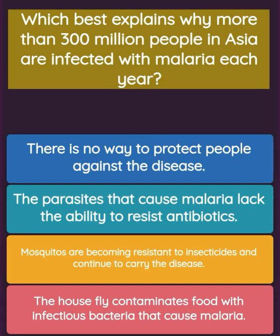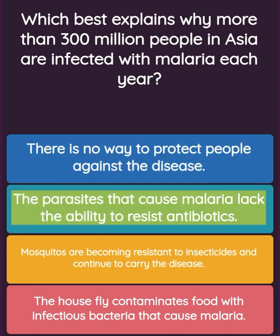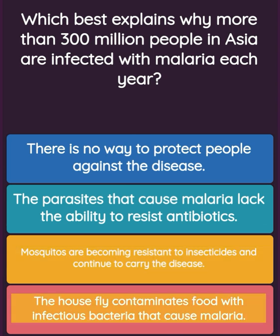Question: Which best explains why more than 300 million people in Asia are infected with malaria each year? Option one: there is no way to protect people against the disease. Option two: the parasites that cause malaria lack the ability to resist antibiotics. Option three: mosquitoes are becoming resistant to insecticides and continue to carry the disease. Option four: the housefly contaminates food with infectious bacteria that cause malaria.